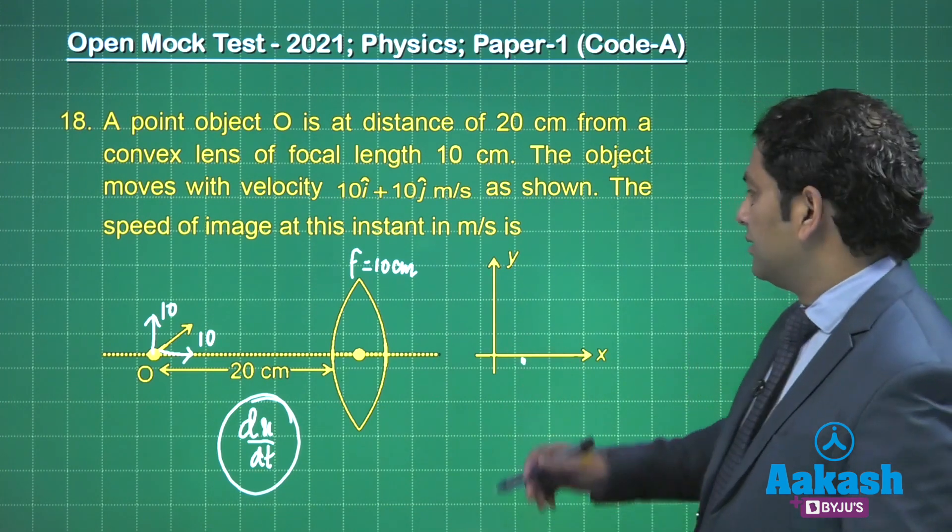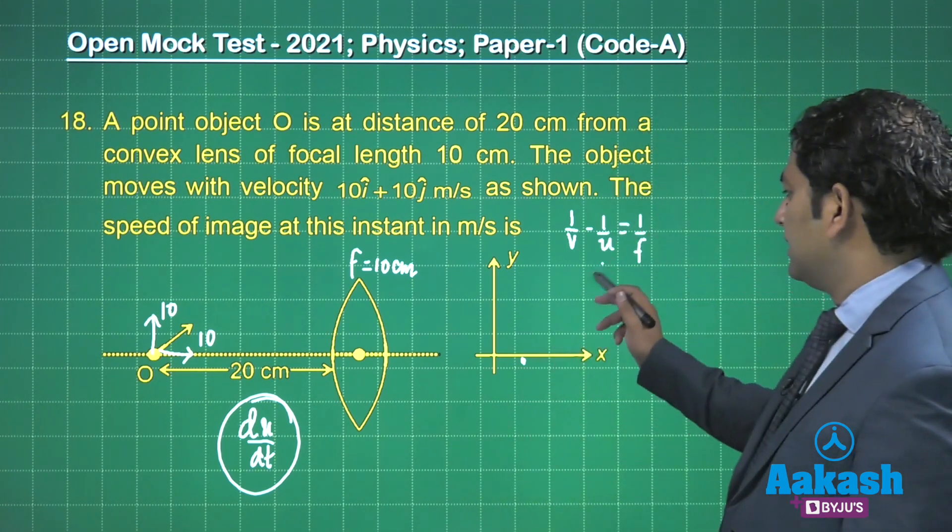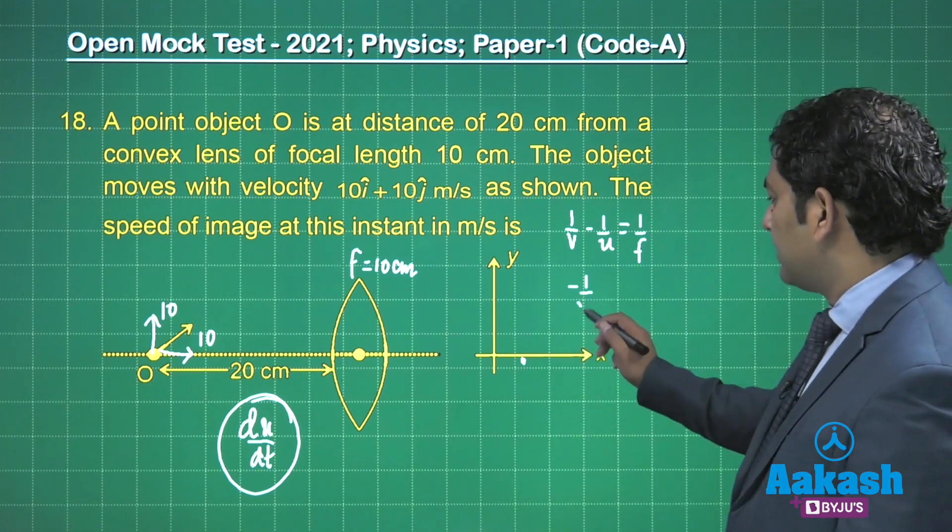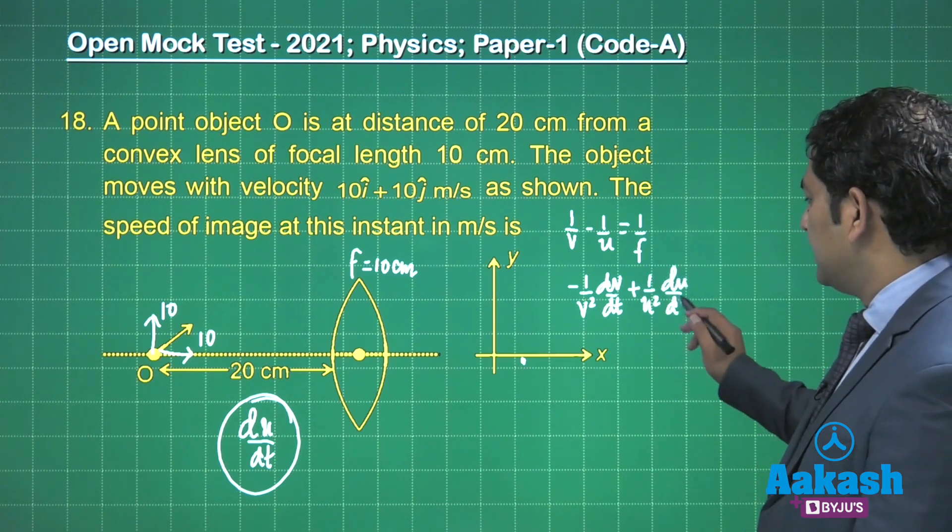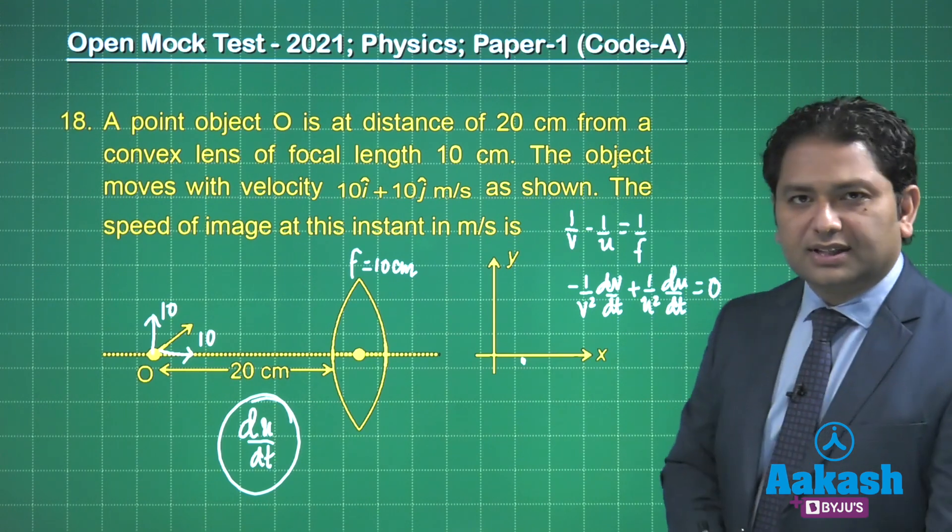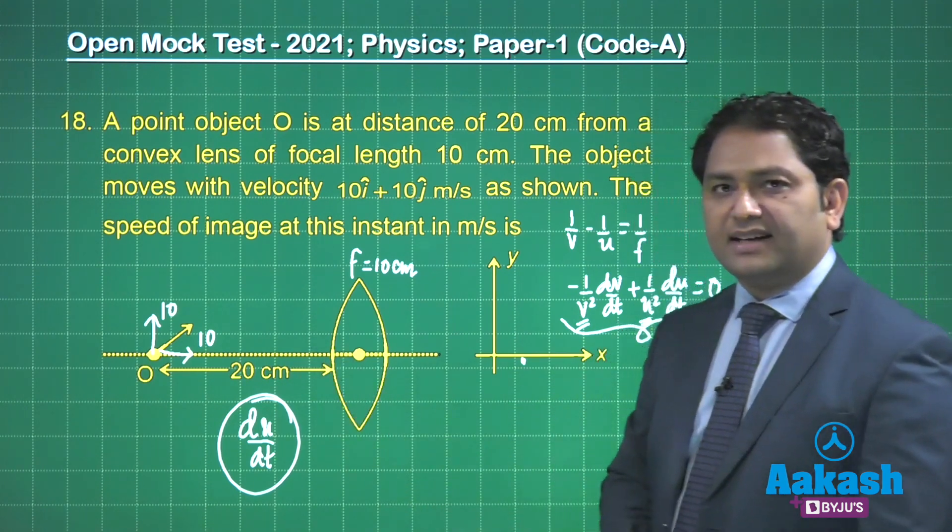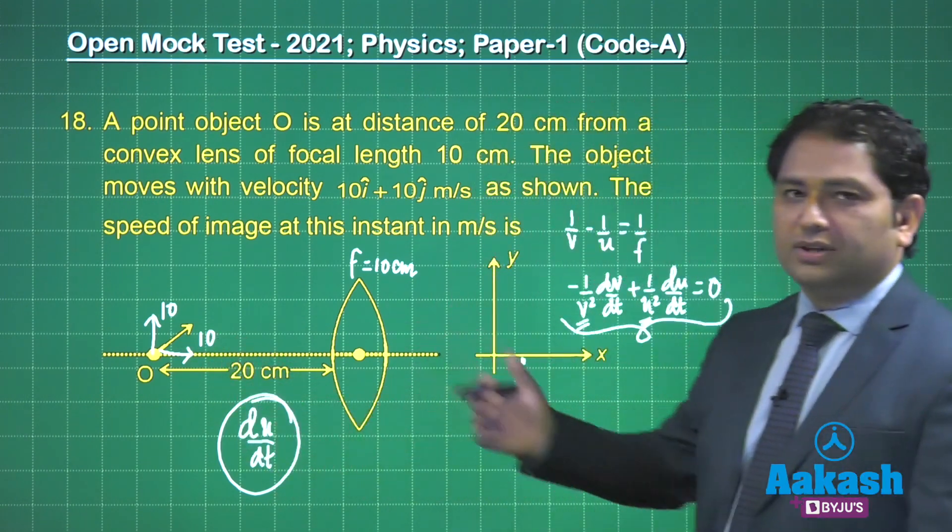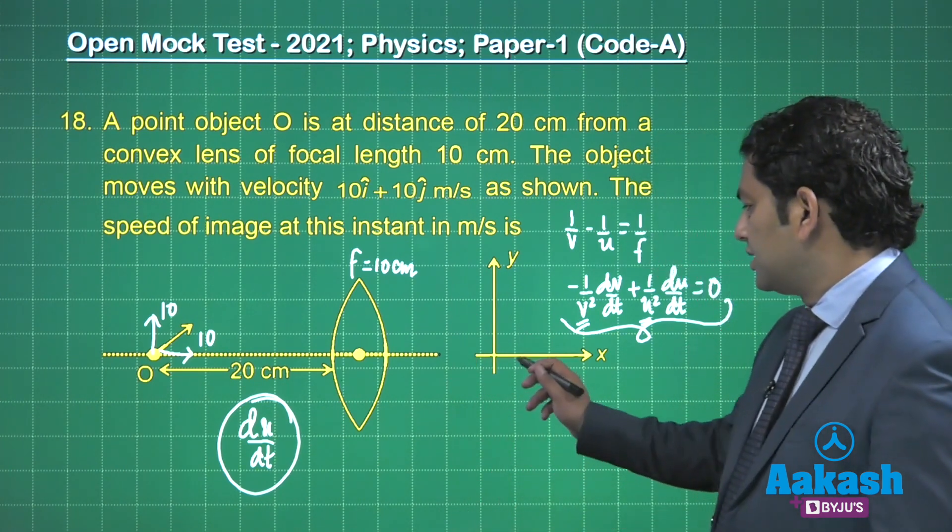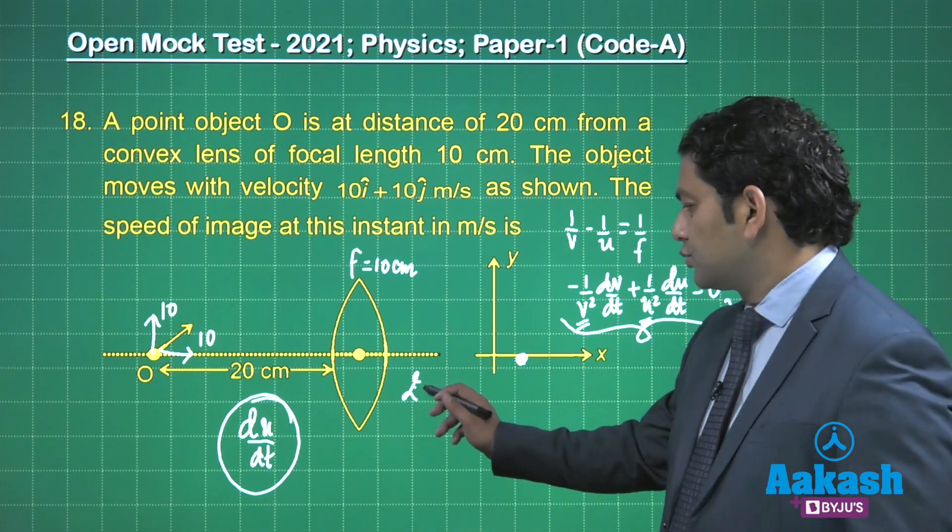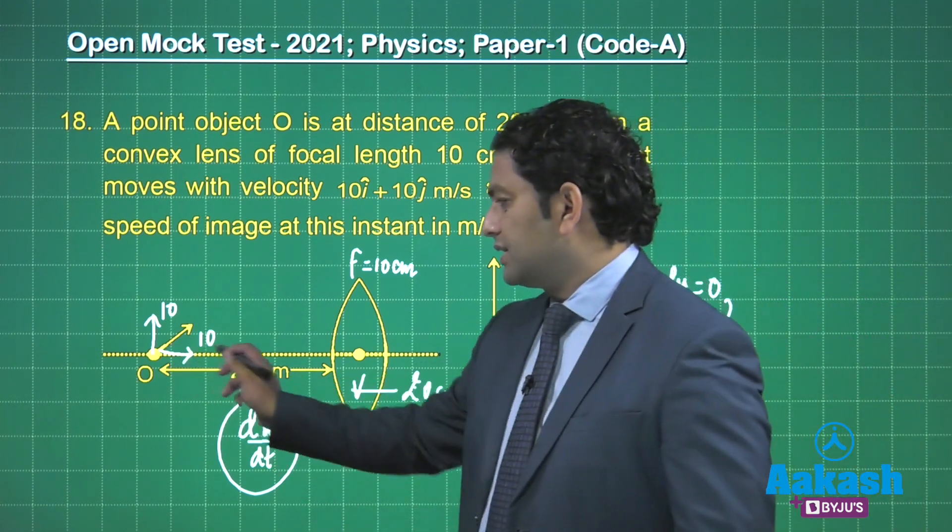And what would be the formula? 1/v - 1/u = 1/f, right? That's the lens formula. So I'll get -1/v²·dv/dt + 1/u²·du/dt, that equals zero. Because v and u are exactly same at this instant, so the image velocity corresponding to x would be equals to that of object velocity, right? So the image, if it is here somewhere, that is the distance 20 centimeter, right, that's how it goes. The image will be going towards infinity. Why? Because the object is coming towards f, so the image has to go towards infinity, isn't it? That's how it goes. That's a very straightforward one, and that component will be 10.